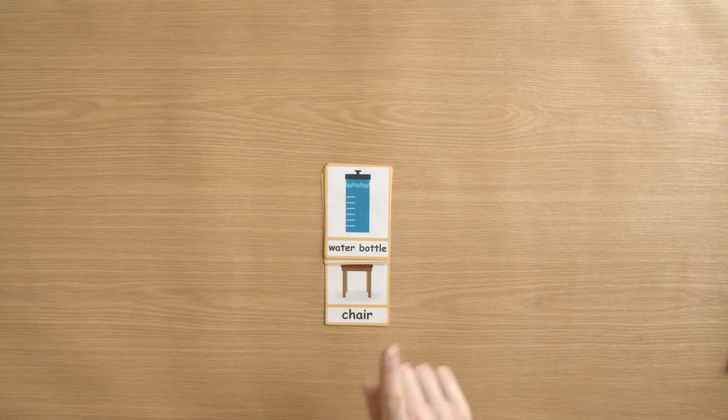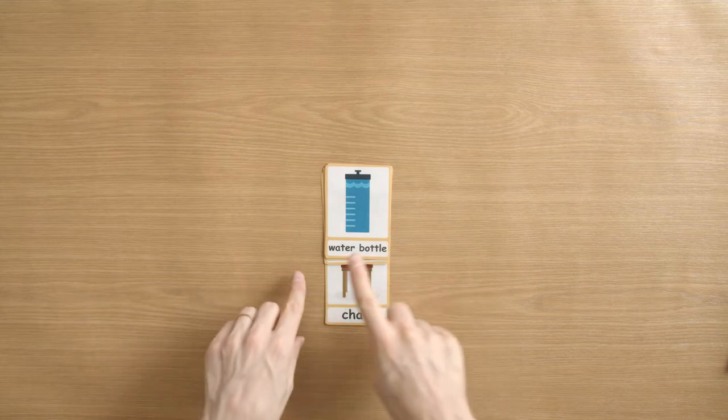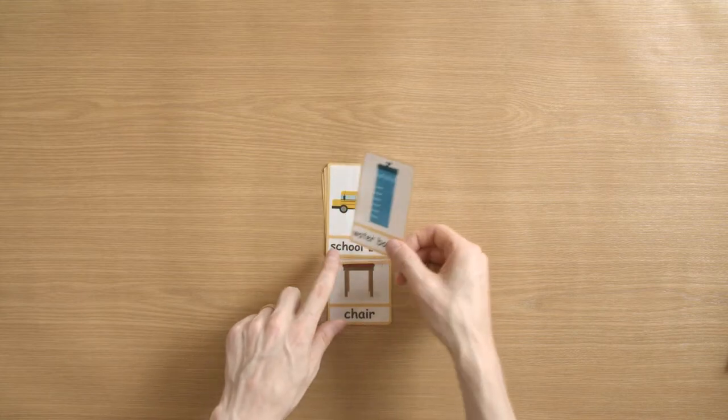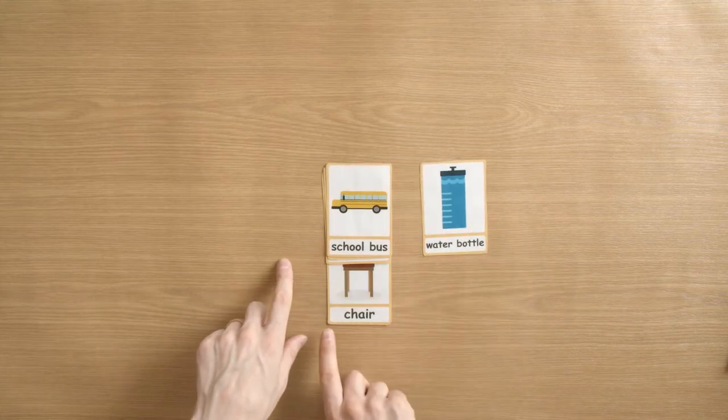So let's say it. Can you say it this time? So we say a water bottle is on a chair. A school bus is on a chair.